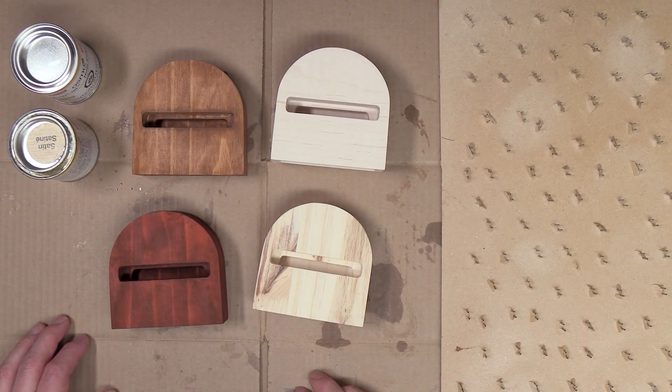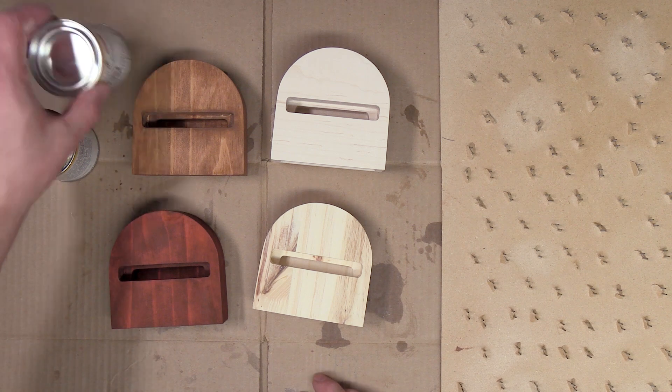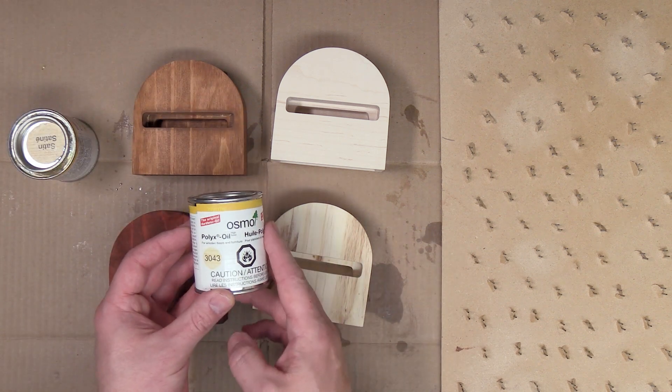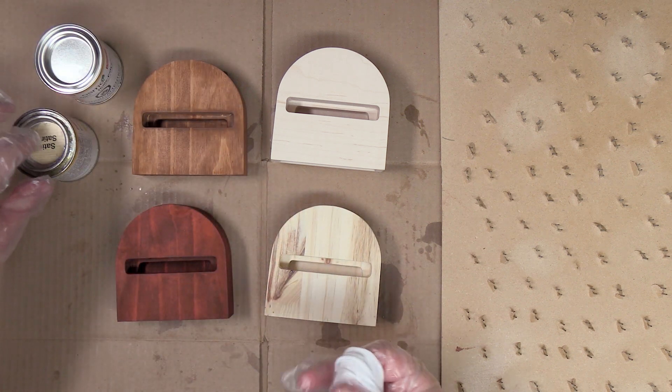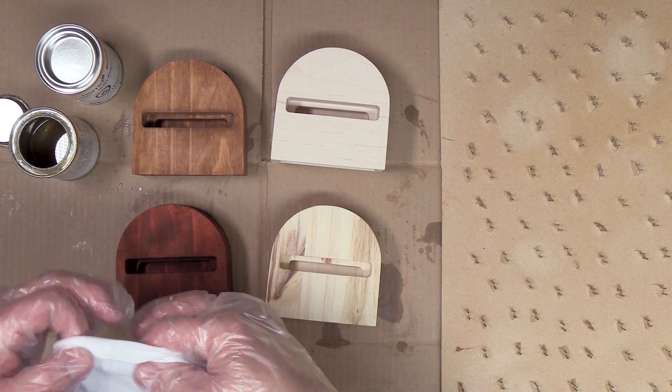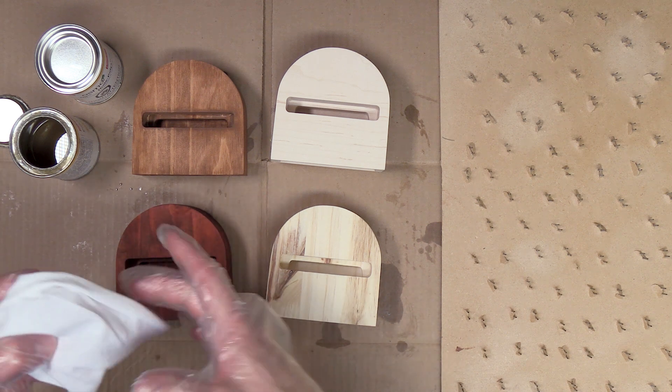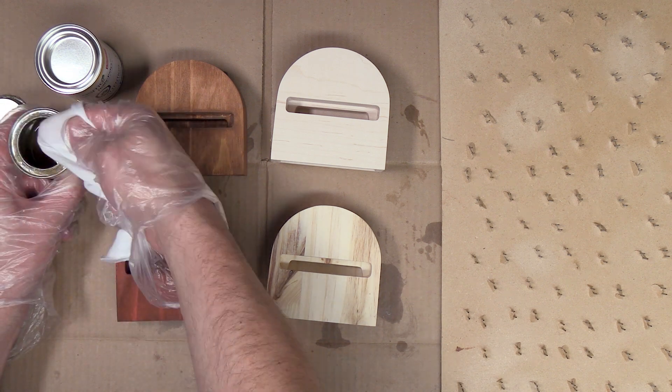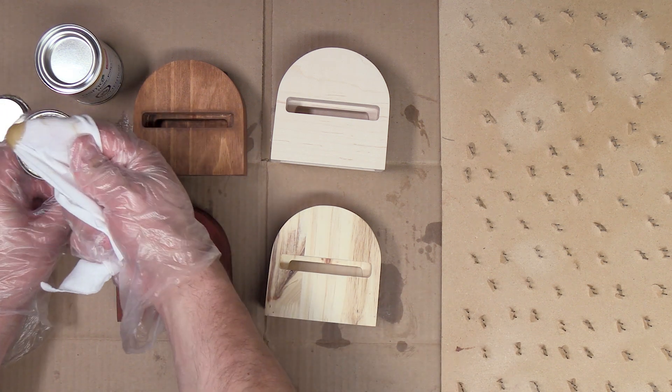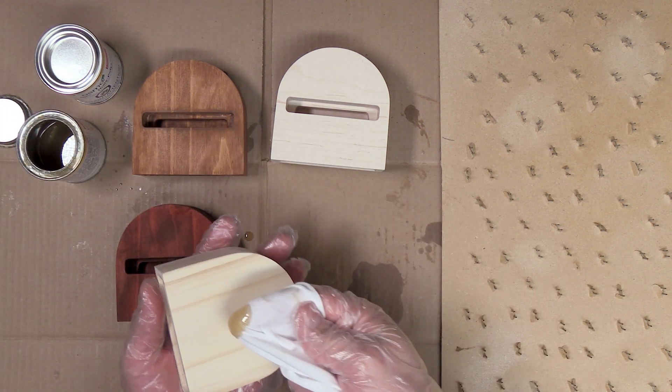To finish my projects I'm going to use this Osmo oil. This particular oil has a product number of 3043. This is a hardening oil that Colin from Woodwork Web turned me on to. I've found that it does a good job of popping the grain while also protecting your wood. It's not a cheap product but a little bit does go a long way.